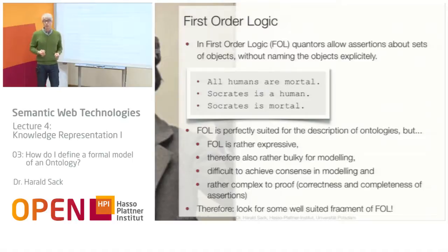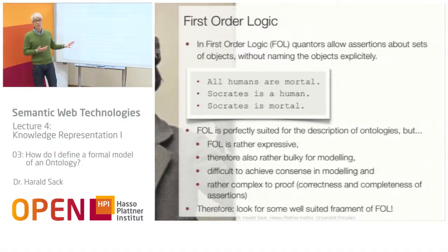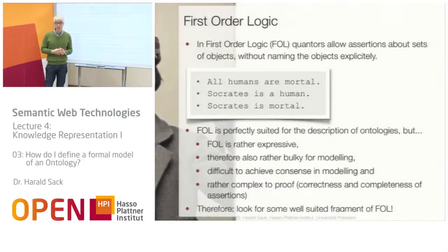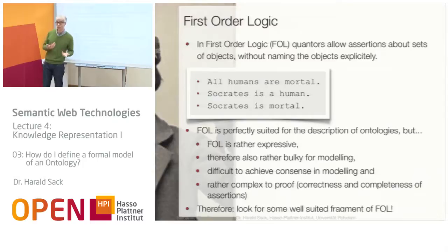This is very useful: you have a general statement, a special statement, and then you can infer implicit knowledge for a specific individual. First-order logic is perfectly suited for describing ontologies, but it is rather too expressive and complex computationally. Some calculations in first-order logic are not decidable — not computable. This expressiveness makes models bulky, with many interpretations and different ways to express the same knowledge, making it difficult to achieve consensus about a model.